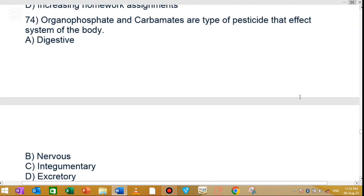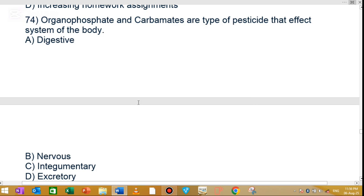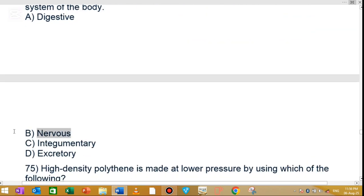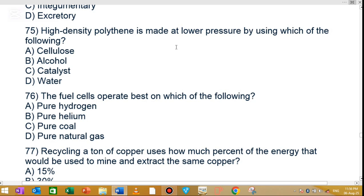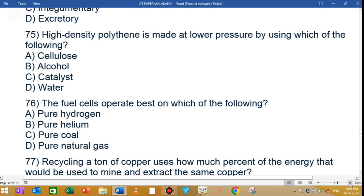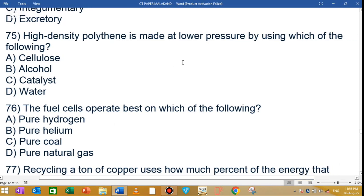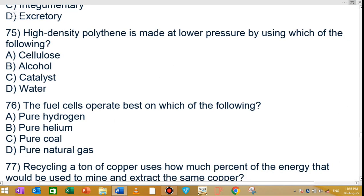Question number 74 and 75: Organophosphates and carbamates are a type of pesticide that affect the nervous system of the body. The key is that these pesticides affect the nervous system. Option C is the correct answer.